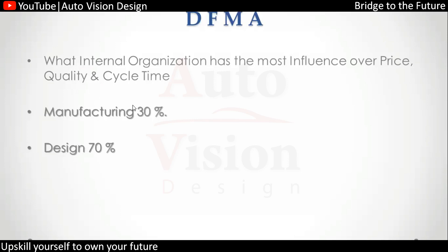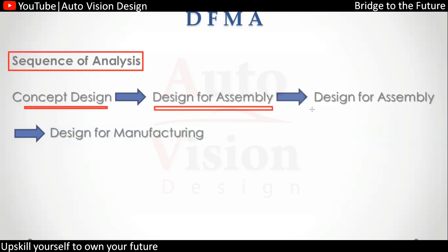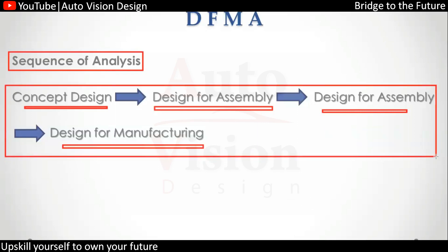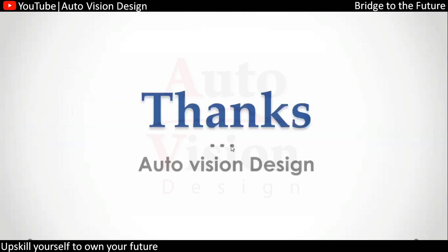The sequence is also important: starting with concept design, we move to Design for Assembly, then to Design for Manufacturing. This is the flow for the sequence analysis — this is how we conduct the analysis and conclude where we can reduce cost and reduce process time using Design for Manufacturing and Assembly.